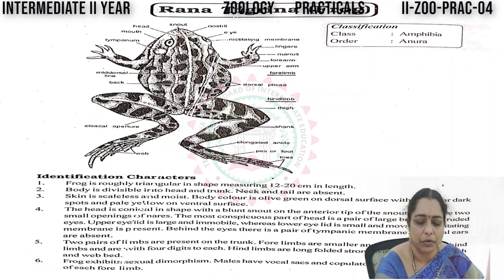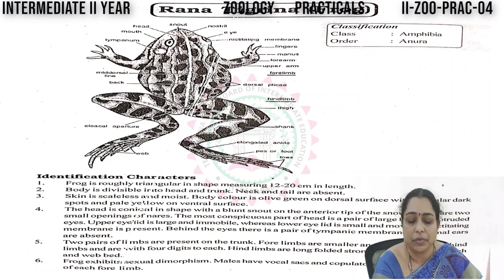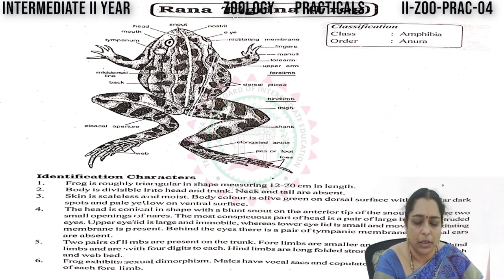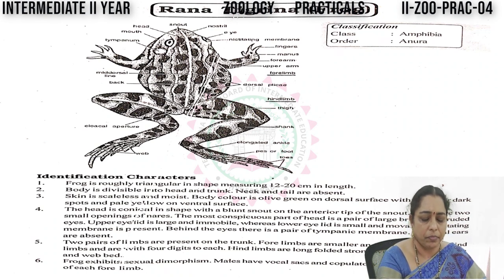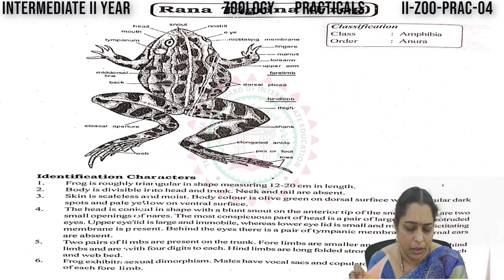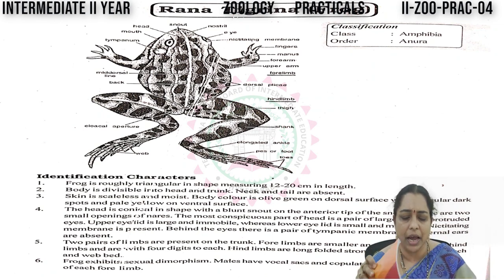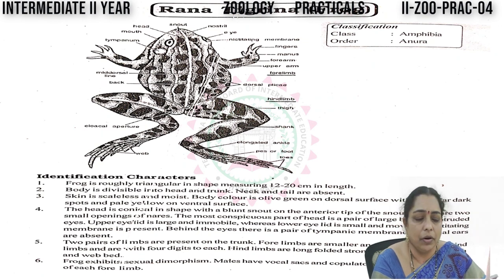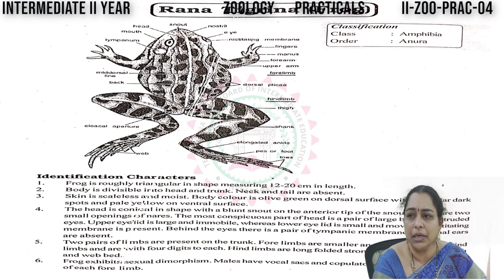The next specimen is Rana tigrina, commonly known as the common frog. Here we see the classification: Phylum Chordata, Subphylum Vertebrata, Superclass Gnathostomata, Class Amphibia. The diagram is somewhat difficult to draw, but we should draw and label it.